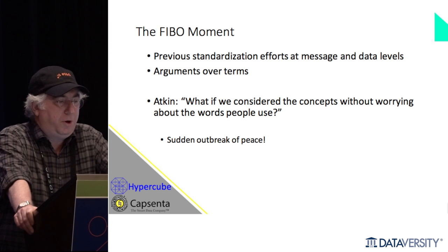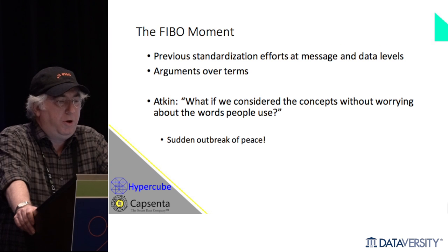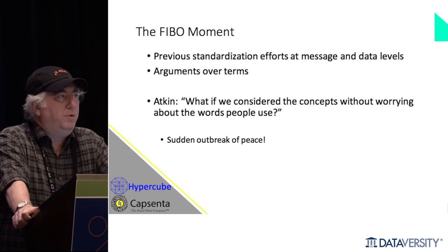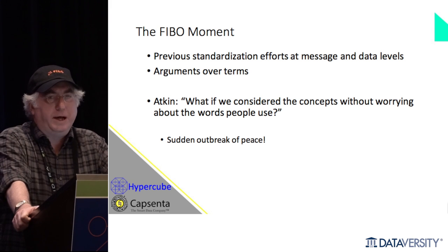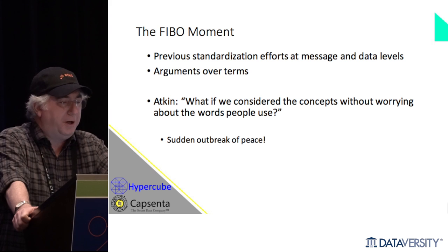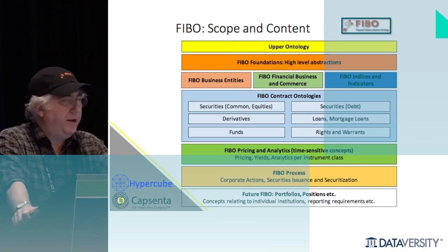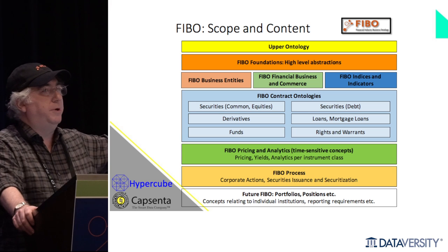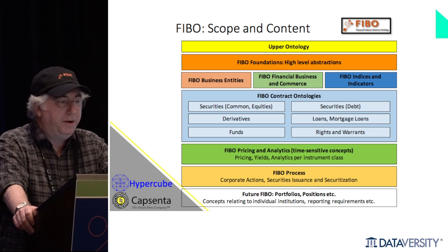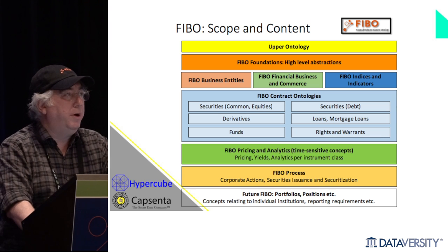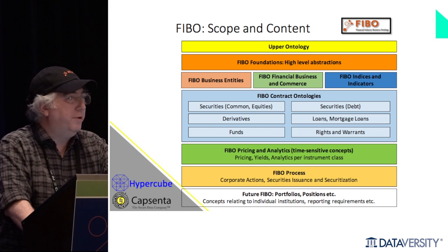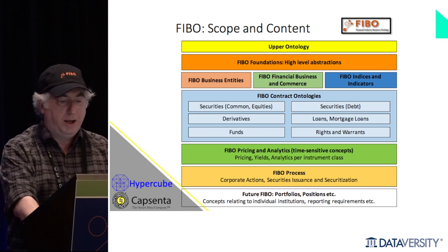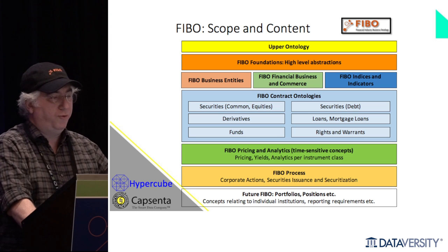In FIBO, we had what I call the FIBO moment. A lot of us had been involved with other standards efforts in messaging. There were lots of people arguing about a term — what are our 30 critical data elements, what should we call them, what's a counterparty? Then Mike Atkins stood up and said: we're not going to get agreement about these words, but can we agree what the concepts are? Park the words to one side. Can we agree on the concepts we're interested in? And actually everybody could. Everybody in the room understood the concepts, and if told they didn't have to care what to call them, the problem went away.